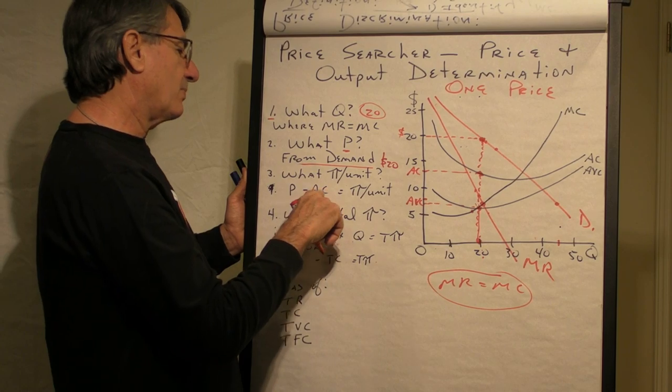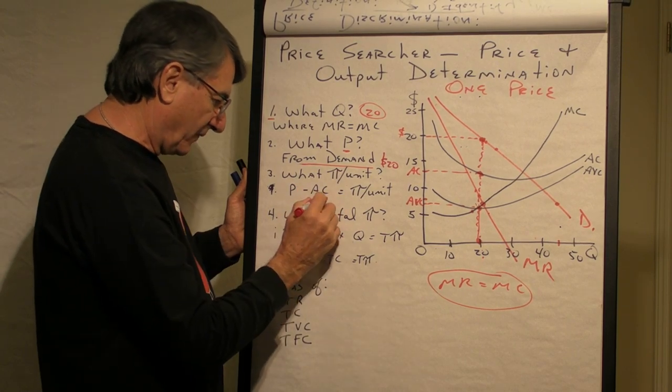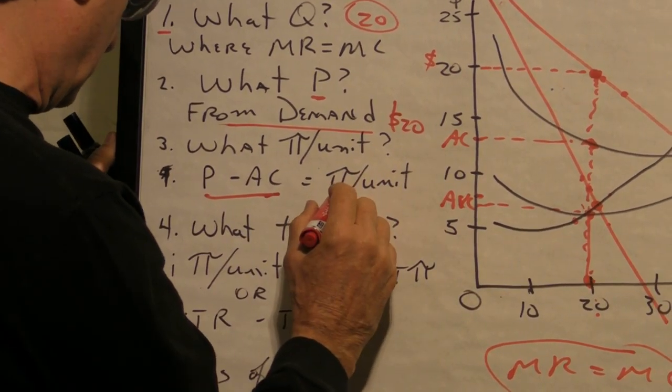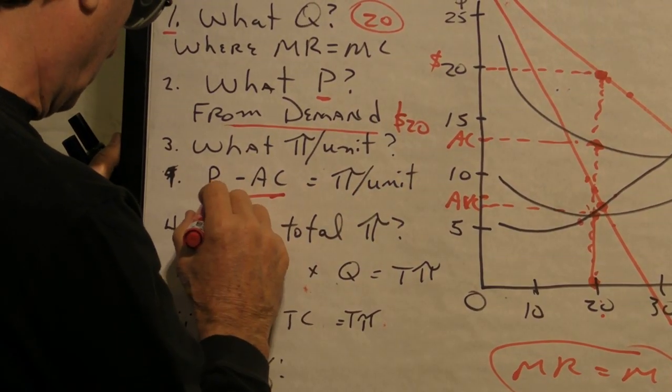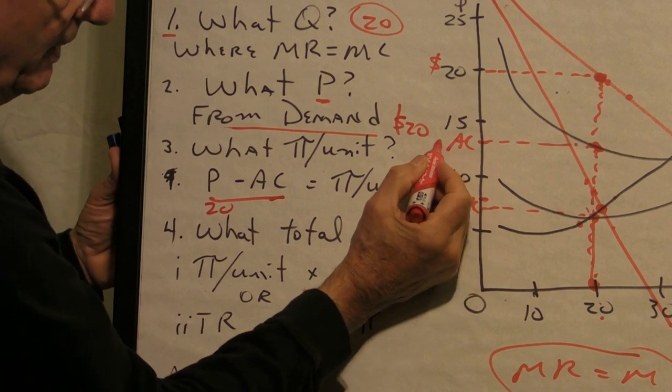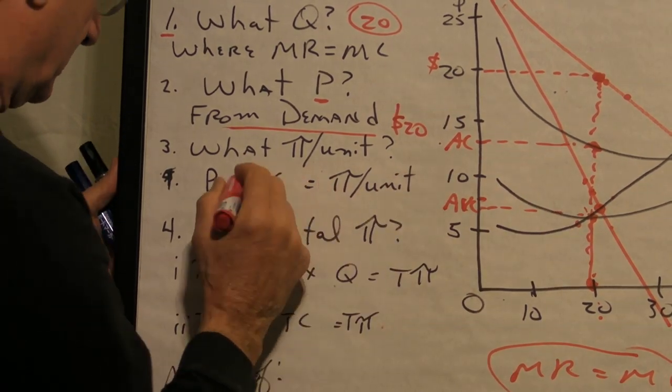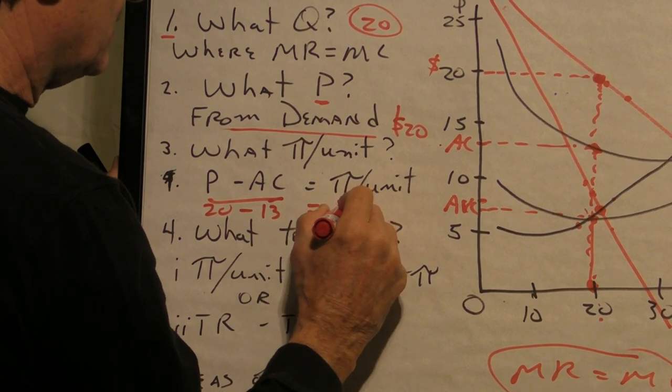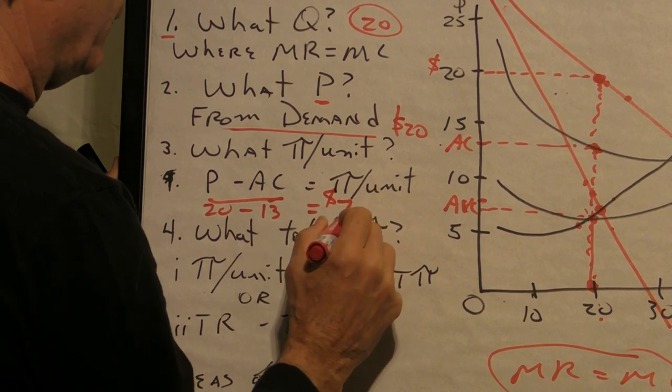What will be the profit per unit? Well, the formula for profit per unit is price minus average cost. So, the price here is $20, and this point of average cost is, we'll say, 13 units, so 20 minus 13 means $7 per unit profit.